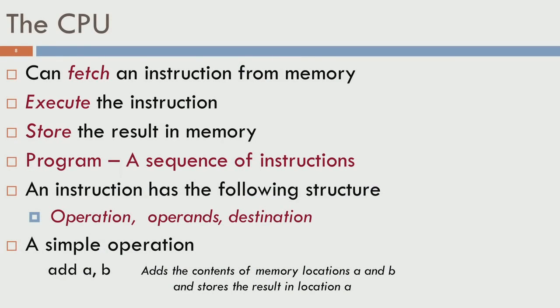So let's look at the basic operations of a CPU. The CPU can fetch an instruction from memory, execute the instruction - based on whatever instruction is given, it can actually execute it. This could be addition, subtraction, multiplication, comparison, anything. It can also store the result back in memory.